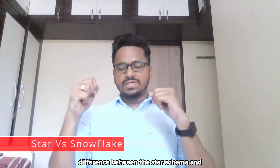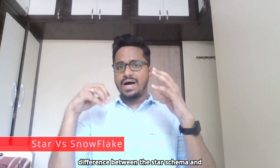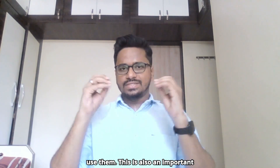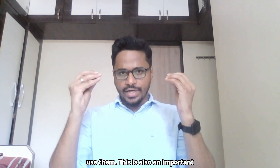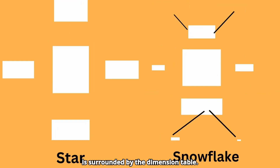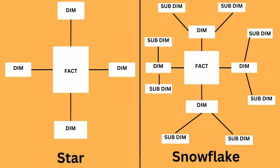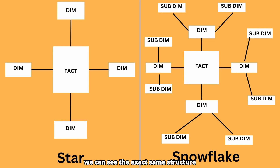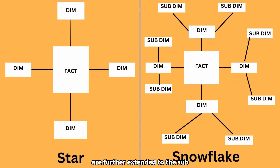Today we are going to talk about the difference between the star schema and the snowflake schema and when exactly we use them. This is also an important interview question, so let us get started. On the left hand side of the screen we have a star schema wherein the fact table is surrounded by the dimension table.